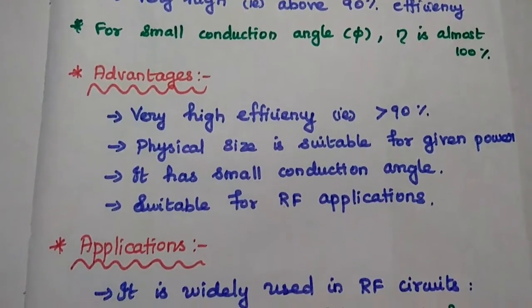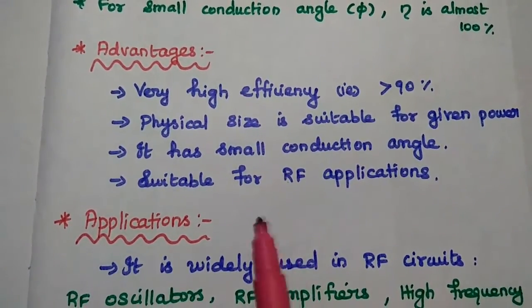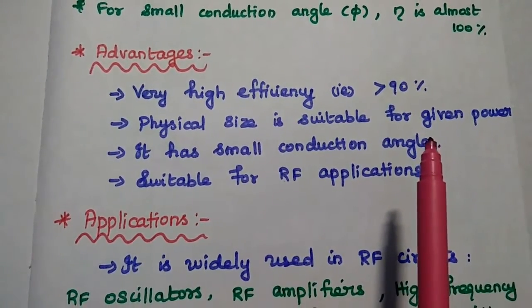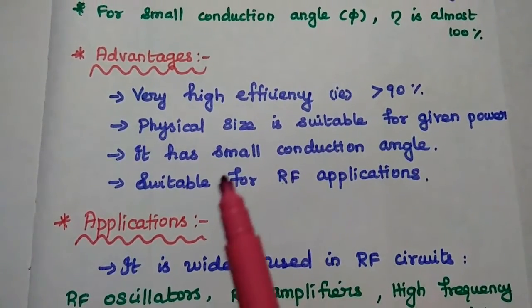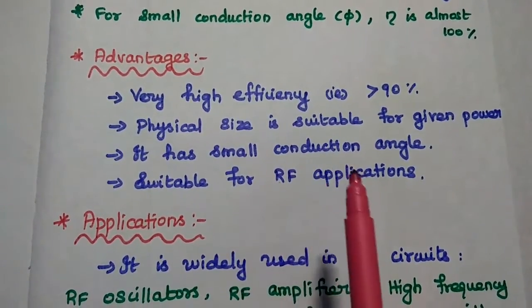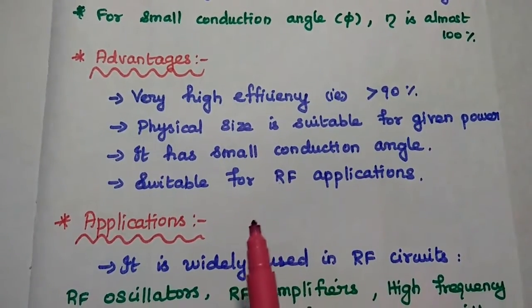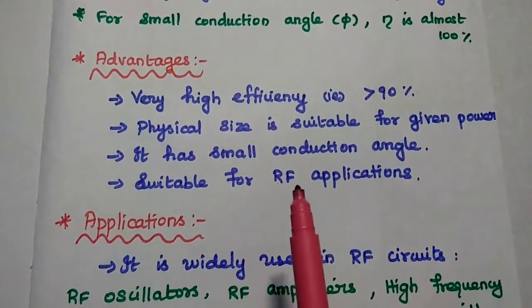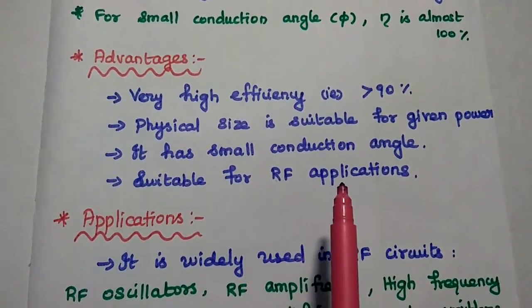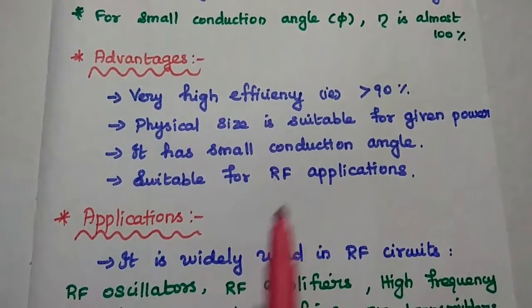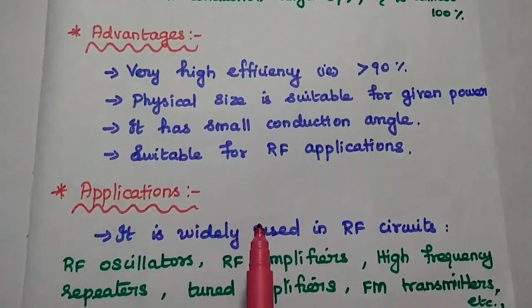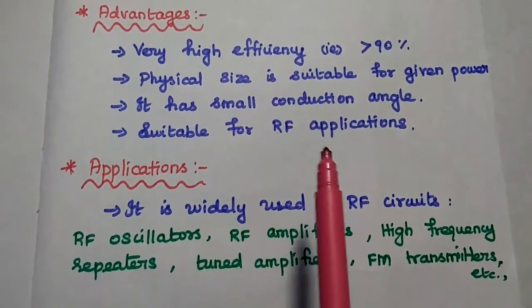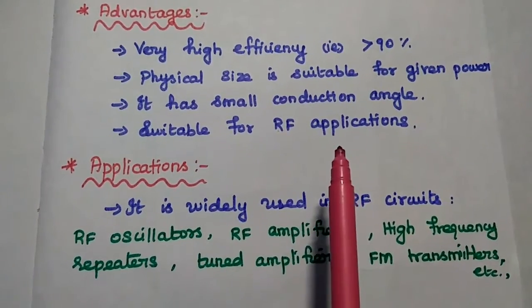Next, the advantages of class C amplifier: it has very high efficiency, above 90 percent. Physical size is suitable for a given power. It has a small conduction angle — the smaller the conduction angle, the higher the efficiency. It is widely used in RF applications. However, it cannot be used for audio frequency range.